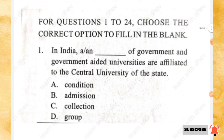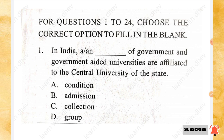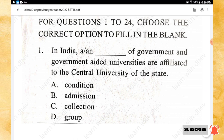The first section is Word and Structured Knowledge. For questions 1 to 24, choose the correct option to fill in the blank. Question 1: In India, a _____ of government and government-aided universities are affiliated to the central university of the state. Options: condition, admission, collection, group. The right answer is option D — group.